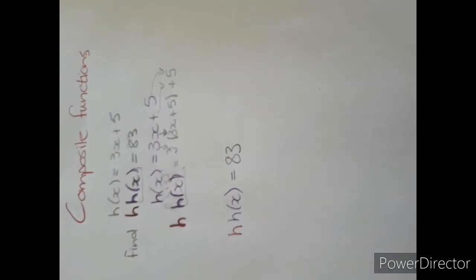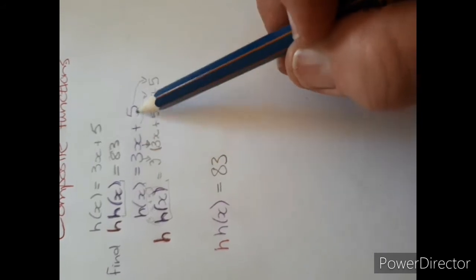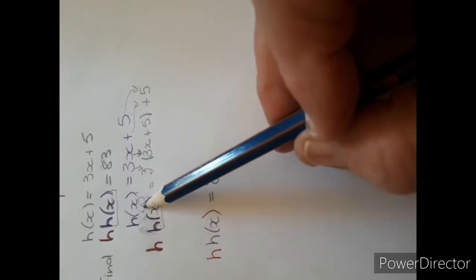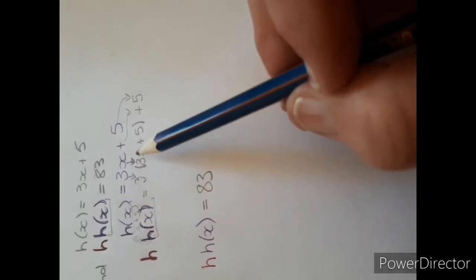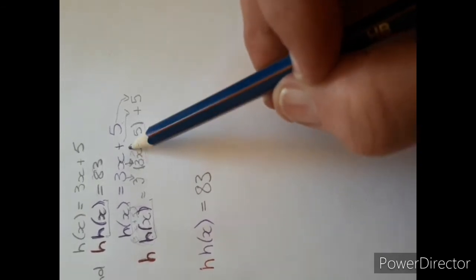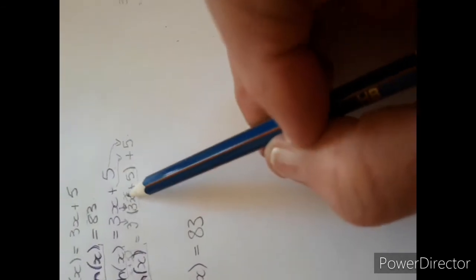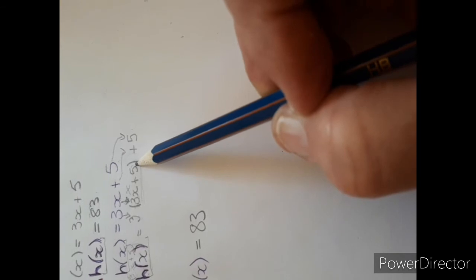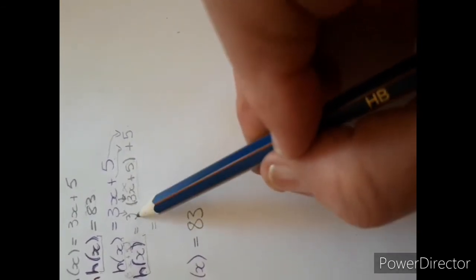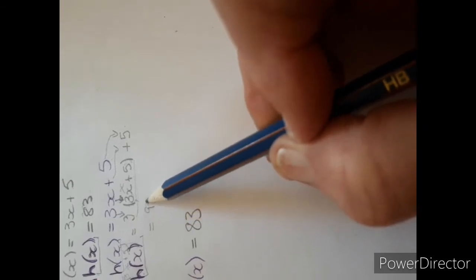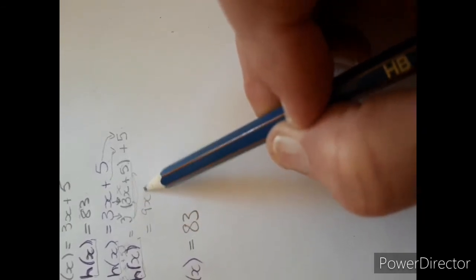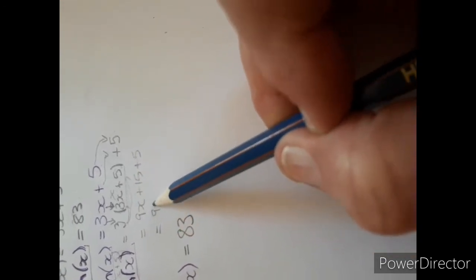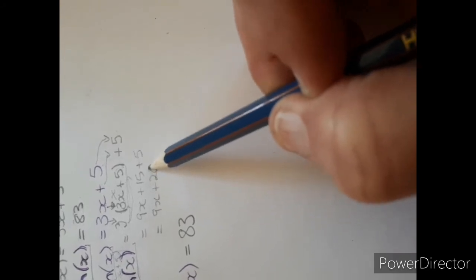H(x) is the same as 3x plus 5. Now H(x) — remember this — H(x) is the same as 3x plus 5. So you basically have to have 3 times, this whole thing is x, plus 5. But instead of that x, you have to substitute the 3x plus 5. And if you look at this now, we will first multiply out the bracket, which gives 9x, then 3 times 5 is 15, plus 5.